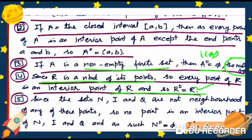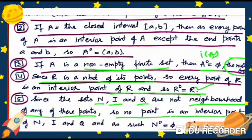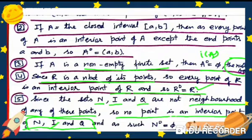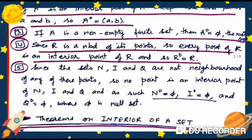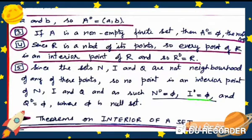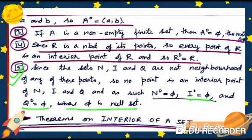Example 5: Since N (natural numbers), I (integers), and Q (rational numbers) are not neighborhoods of any of their points, no point is an interior point of N, I, or Q. Therefore N° = φ, I° = φ, and the interior of Q equals φ, where φ is the null set. This is a very, very important example.